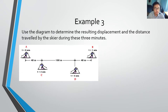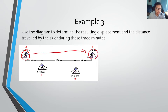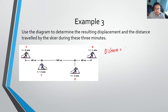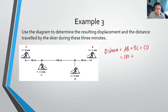Another example to show the differences between displacement and distance. Use the diagram to determine the resulting displacement and distance traveled by the skier during three minutes. The skier starts at A at zero minutes, then goes to B at one minute, C at two minutes, and finally D at three minutes. The distance is A to B plus B to C plus C to D: that's 180 plus 140 plus 100, giving a total distance of 420 meters.